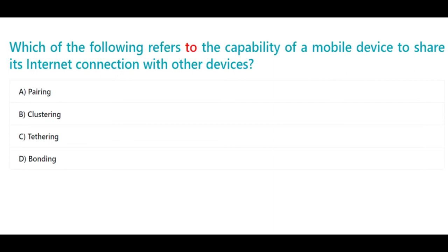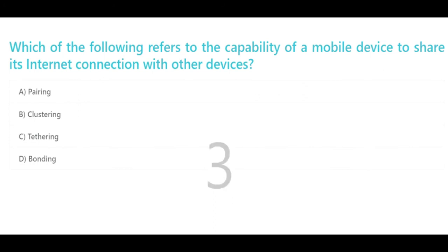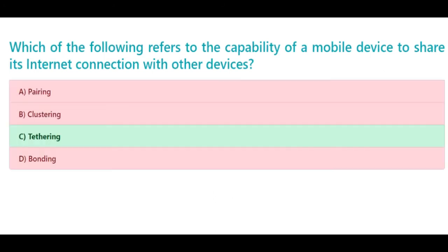Which of the following refers to the capability of a mobile device to share its internet connection with other devices? a. Pairing, b. Clustering, c. Tethering, d. Bonding. The correct answer is c. Tethering.